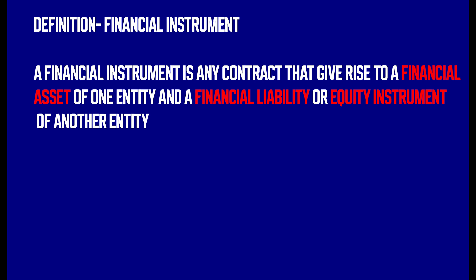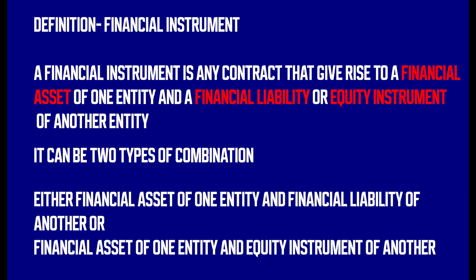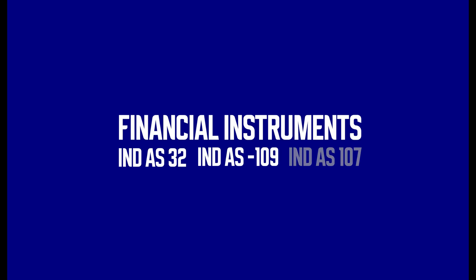So you can see there are two types of combinations: either a financial asset of one entity and a financial liability of another, or a financial asset of one entity and an equity instrument of another. Financial instruments are classified into three categories: financial assets, financial liabilities, and equity instruments. The accounting standards IAS 32, IAS 109, and IAS 107 are going to deal with these three important classifications.